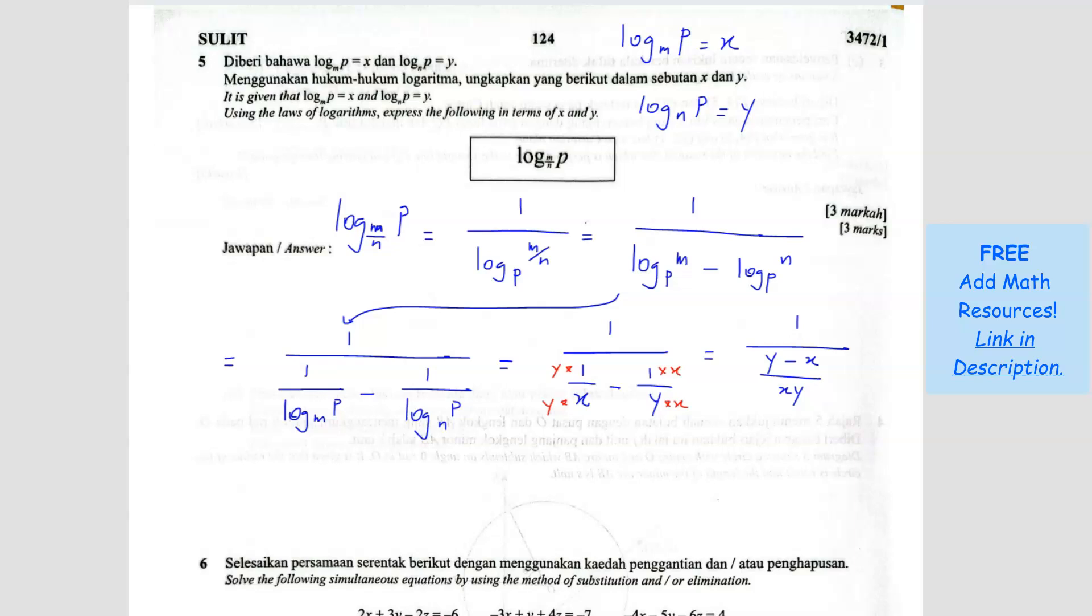Because they are already the same, we are going to times XY times XY so that I can cancel this XY. And what I will have is XY over Y minus X. So this is your answer.